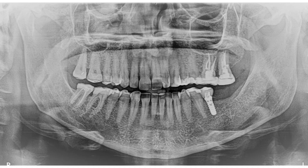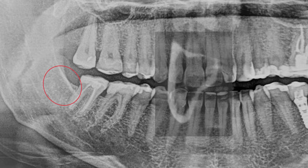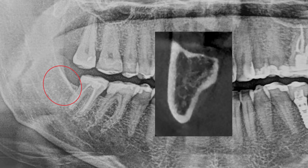The X-ray image — an OPG on the left — shows no suspicious bone structures in the area of 4-8, marked in red. The X-ray image on the right shows the area 4-8 in the DVT cross-section. Again, no clear inflammatory process or osteolytic structure is visible.